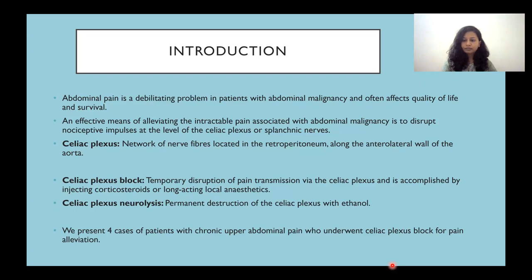Celiac plexus block refers to the temporary disruption of pain transmission via the celiac plexus, accomplished by injecting corticosteroids and long-acting local anesthetics. Celiac plexus neurolysis refers to permanent destruction of the celiac plexus with ethanol. These two terms are often used interchangeably. We present four cases of patients with chronic upper abdominal pain who underwent celiac plexus block for pain alleviation.